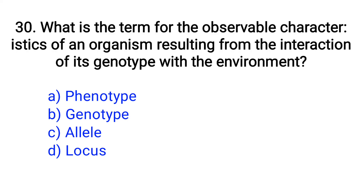Question number 30. What is the term for the observable characteristic of an organism resulting from the interaction of its genotype with the environment? Option A: Phenotype, B: Genotype, C: Allele, D: Locus. The right answer is Option A: Phenotype.